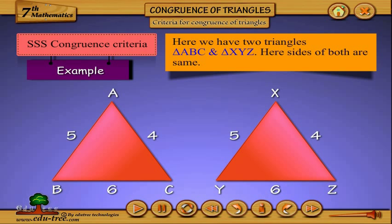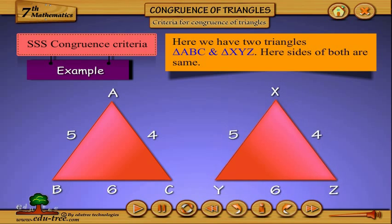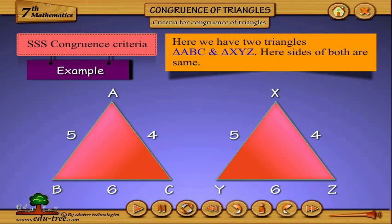Here, we have two triangles, triangle A B C and triangle X Y Z. Here, sides of both are same.